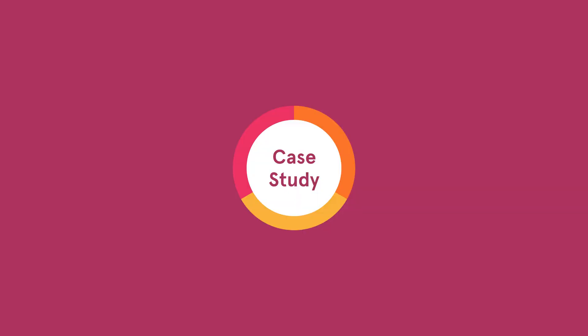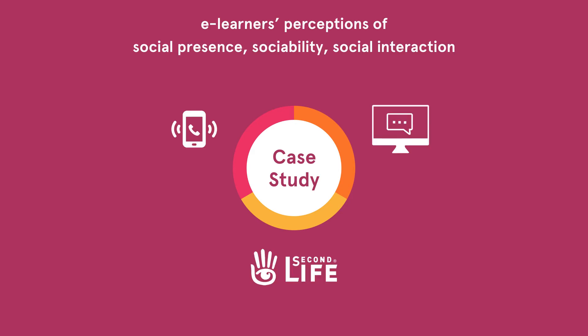An experimental study was used to investigate if e-learners' perceptions of social presence, sociability, and social interaction varied across three synchronous virtual environments, and if their perceptions of these three factors were associated with critical thinking in groups.